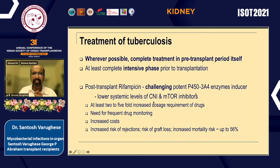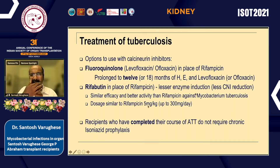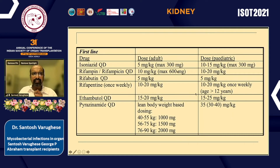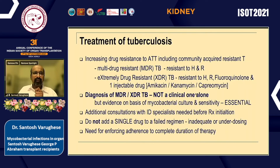Post-transplant use of rifampicin is challenging because it lowers the levels of CNI and MPA inhibitors, increases dosage requirements, requires frequent monitoring, and carries risks of rejection, graft loss, and in one study, high mortality. Options include using a fluoroquinolone like levofloxacin or moxifloxacin in place of rifampicin with a prolonged course — some reports including from Pakistan use 18 months of ATT. Rifabutin can be used in place of rifampicin as it has less enzyme induction; however, the dose is half that of rifampicin. Patients who complete the course do not require chronic prophylaxis.